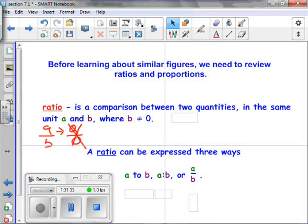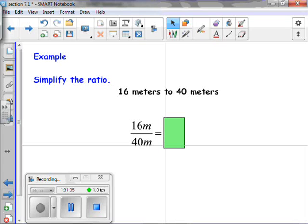Now, let's see what some of these things can do. So, simplify the ratio 16M over 40M. All we're going to do is find our common factors and divide them out.